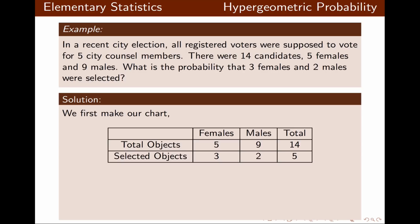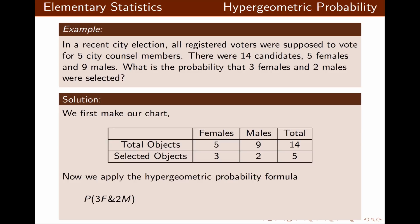We make our chart with females and males, the number for each group, and the number of selections from each group. Now we can use the hypergeometric probability formula: five females selecting three, times nine males selecting two, divided by the total number of all outcomes, which is 14 selecting five. Once we do the calculation, we get 180 divided by 1001.